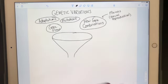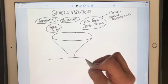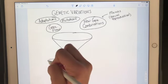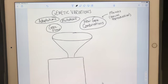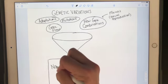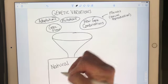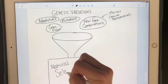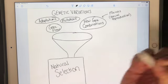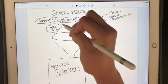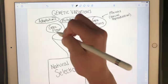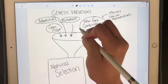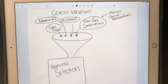I'm going to draw. And this machine that processes these genetic variations is natural selection. So natural selection is going to act on the adaptations, the mutations, gene flow, and new combinations of genes and alleles.